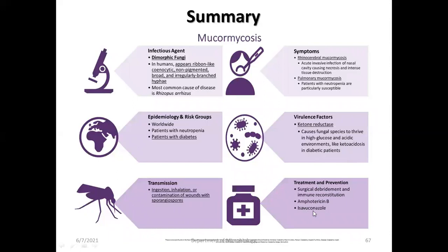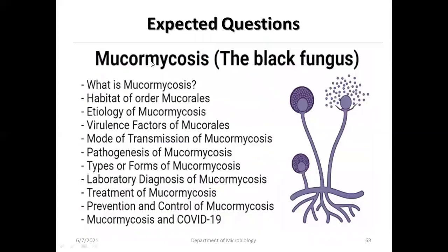Expected exam questions include: what is mucormycosis, habitat and order of mucormycosis, etiological agents, predisposing factors, mode of transmission, pathogenesis, types/forms, laboratory diagnosis, treatment, prevention and control, and mucormycosis and COVID-19. Thank you students — I hope you understood the topic well. We are always available in the department and you can reach us at any time. Kindly share your roll number in the comment section as proof of attendance.